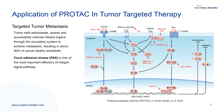Tumor cells extravasate, spread, and successfully colonize distant organs through the circulatory system to achieve metastasis, resulting in about 90% of cancer deaths worldwide. Epithelial-mesenchymal transition, a crucial step in the metastatic process, can be activated by several upstream cellular signaling pathways, including the integrin/FAK/PI3K/AKT axis. PROTAC targeting epithelial-mesenchymal transition-related proteins has been developed to regulate cancer metastasis. Focal adhesion kinase (FAK) is one of the most important effectors in the integrin signaling pathway. Overexpression of FAK associated with poor clinical prognosis drives tumor invasion and migration. Currently developed inhibitors do not affect the independent scaffold function of FAK kinase; therefore, PROTAC targeting FAK provides a new strategy for the treatment of tumors.